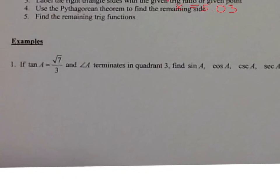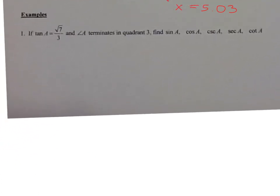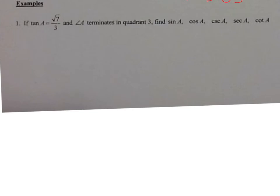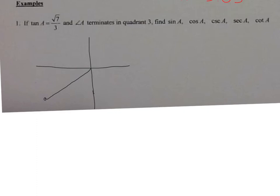Let's take a look at the examples. I have tan A equal to the square root of 7 over 3, and angle A terminates in quadrant 3. The first thing we're going to do is draw a picture. Angle A terminates in quadrant 3. From this terminal side, I'm going to draw a line to the x-axis and create a right triangle. This reference right triangle makes the reference angle, and this is going to be your angle A.